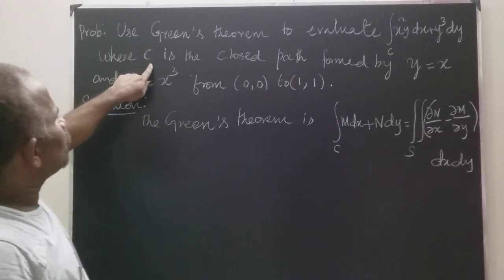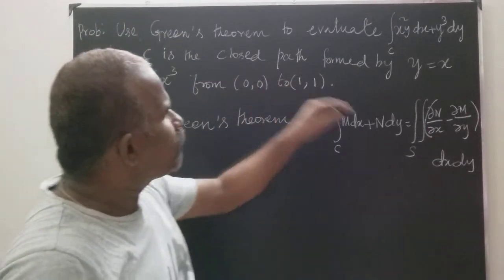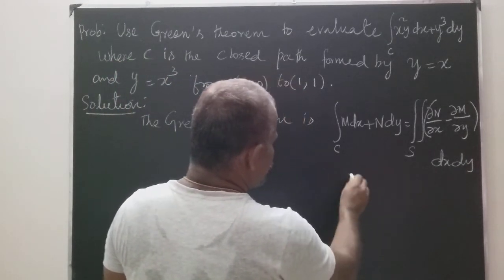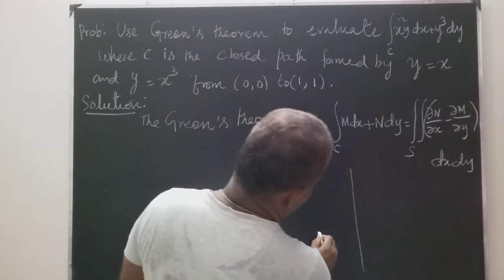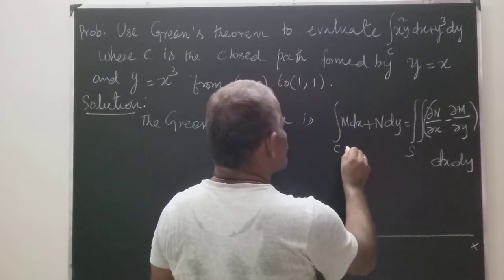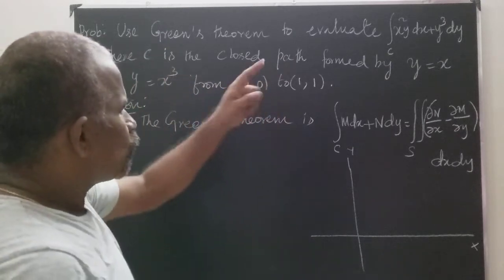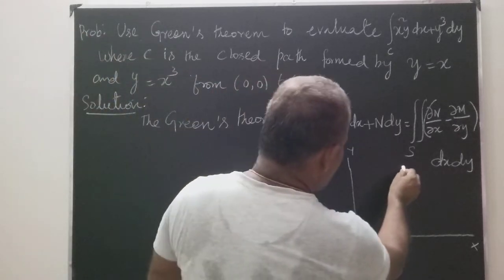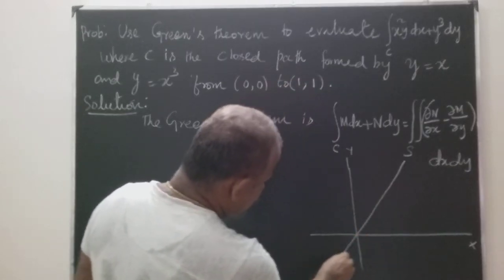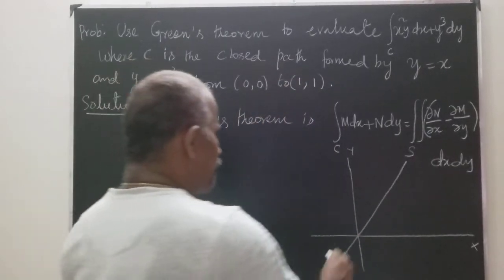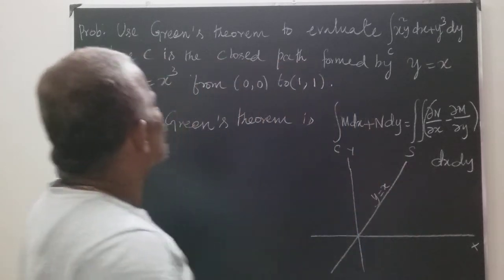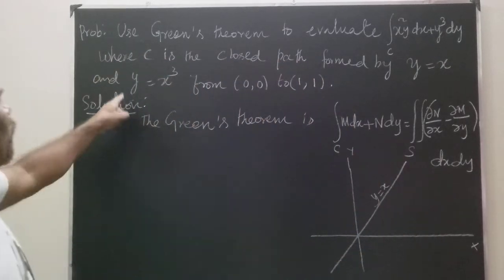Now, c is the closed path formed by y equals x and y equals x cubed. The x-axis and y-axis are shown. y equals x is the line passing through the origin, and y equals x cubed is the cubic curve.